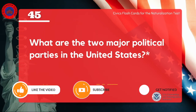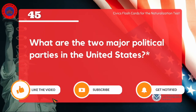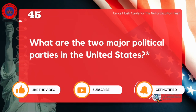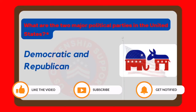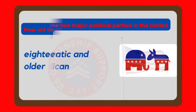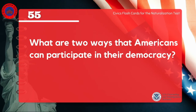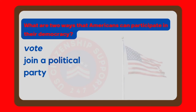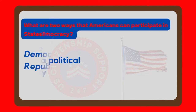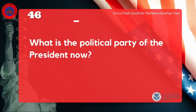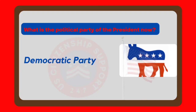What are the two major political parties in the United States? Democratic and Republican. What are two ways that Americans can participate in their democracy? Join a political party. What is the political party of the President now? Democratic Party.